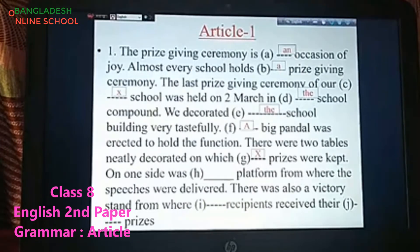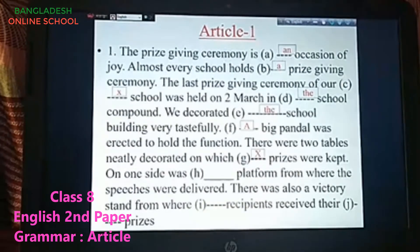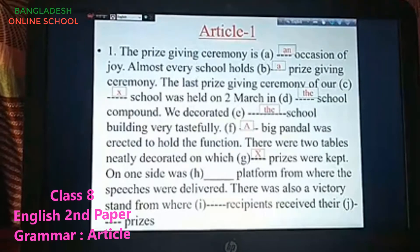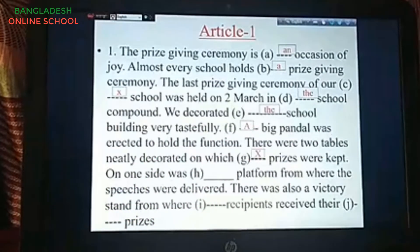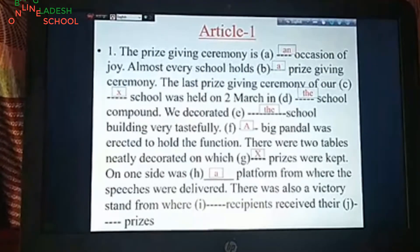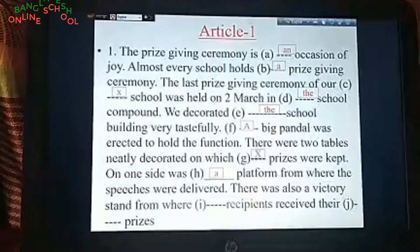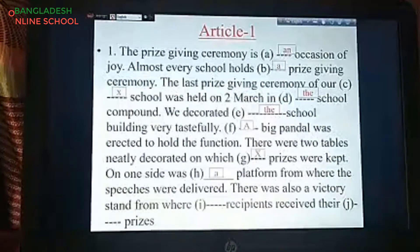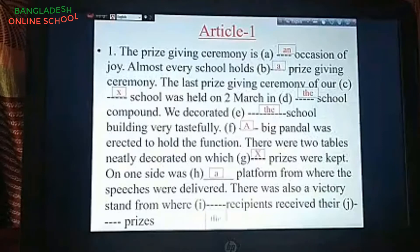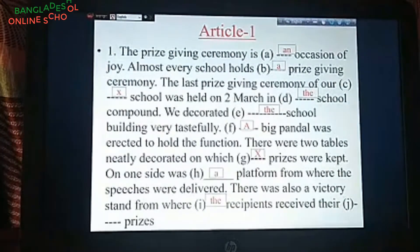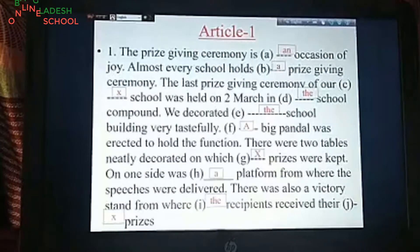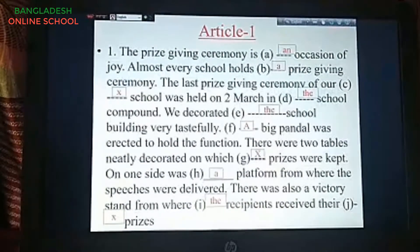Prizes were kept. One side was a platform where the speeches were delivered. There was also a victory stand from where the recipients received their prizes. Here, there is a possessive between the possessive and the noun, so there is no article — a cross is used here.